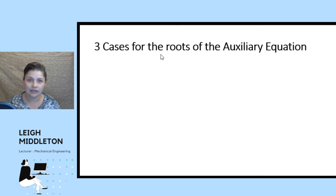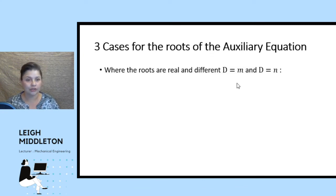So there are three cases for the roots of the auxiliary equation. You can have roots which are real and different, which means that either d is m and d is n, so different values completely, plus one minus one. Those are two different numbers, remember.